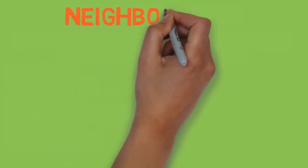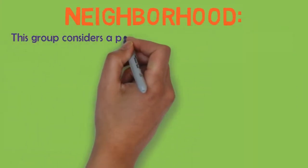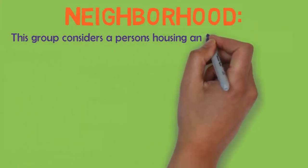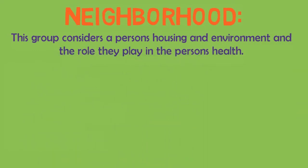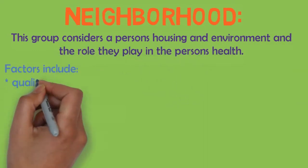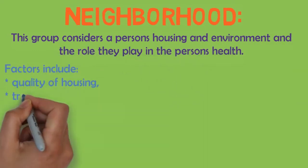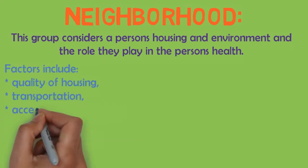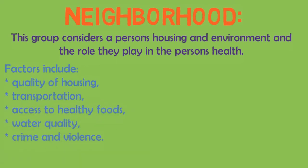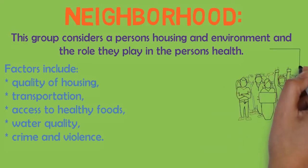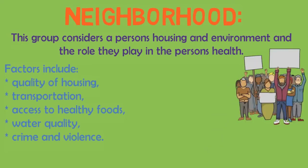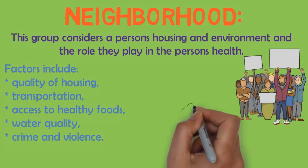Fourthly, we have neighborhood. This group considers a person's housing and environment and the role they play in the person's health. Factors include quality of housing, transportation, access to healthy foods, water quality, and crime and violence rates. A person's neighborhood and living conditions can directly impact their health and safety.